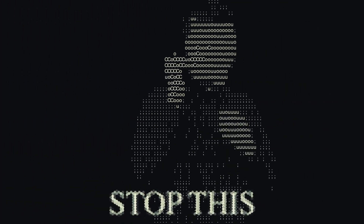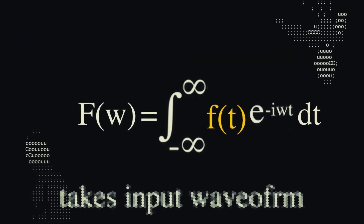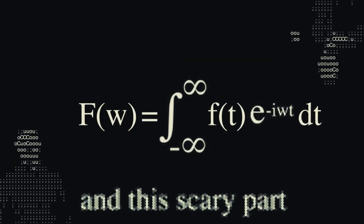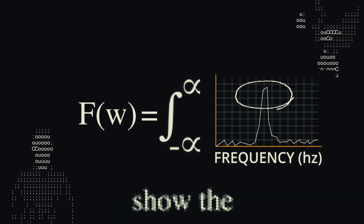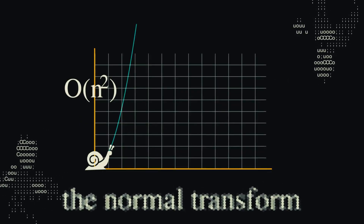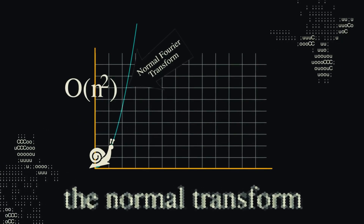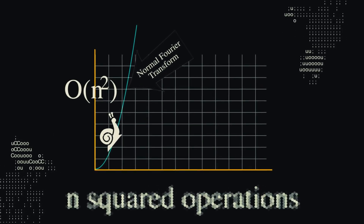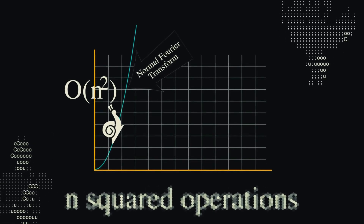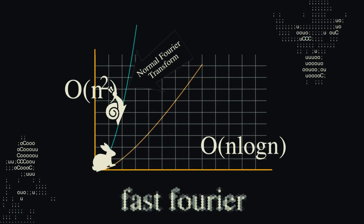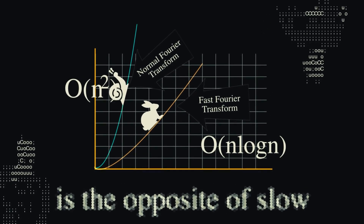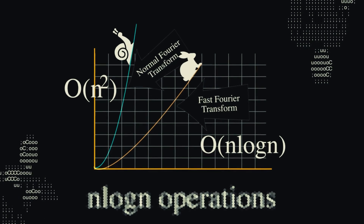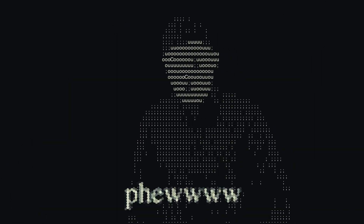F of T takes input waveform quickly. W outputs frequency. And the scary part makes a spike to show the frequency clearly. The normal transform, it is really kind of slow — it uses N squared operations, that's a load. Fast Fourier is the opposite of slow: N log N operations make you fast and whoa.